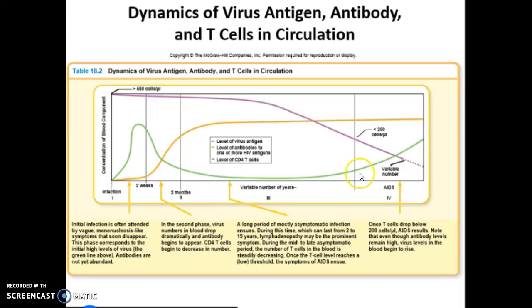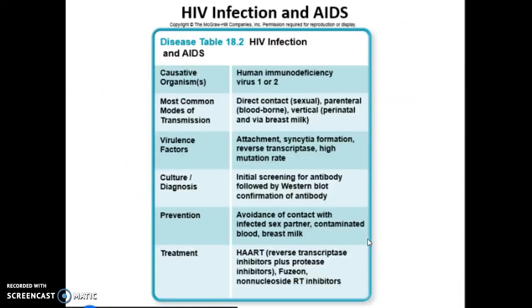Because their CD4-positive T cell numbers are low, they start to come down with those different types of infections. And then this is just the summary table of HIV and AIDS.